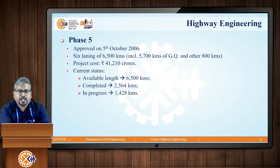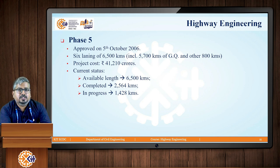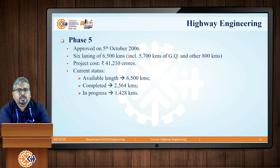Moving on to Phase 5, this was approved in October 2006. It involved 6-laning of 6,500 kilometers of road, out of which 5,700 kilometers were of the Golden Quadrilateral from Phase 1, and the remaining 800 kilometers were additional stretches. The estimated project cost was rupees 41,210 crores. The current status shows that out of the 6,500 kilometers requiring improvement, 2,564 kilometers have been completed, while work in progress covers 1,428 kilometers.